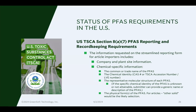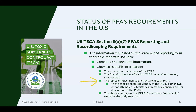The information required in the streamlined reporting form includes your company name and the site information where you're importing or using those articles. Then chemical-specific information, like the common or trade name of the PFAS compound, the identity such as CAS number, TSCA accession number, or low volume exemption number. The molecular structure of that PFAS is also needed — if you have the CAS number, that's already known, but if not, you may have to provide the molecular structure directly.